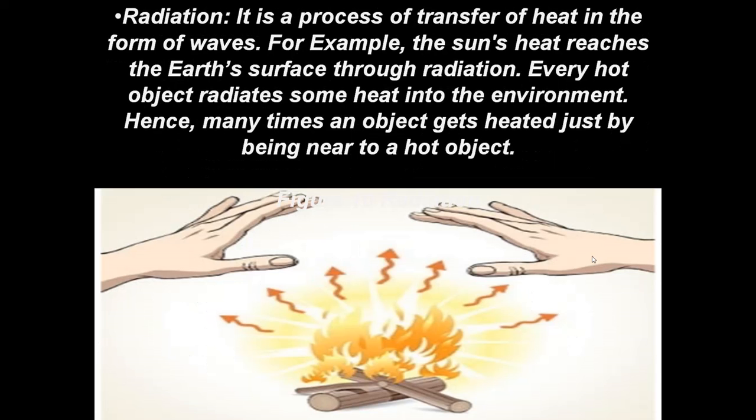The next type of transfer of heat is radiation. Radiation is a process of transfer of heat in the form of waves. For example, the sun's heat reaches the earth's surface through radiation. Every hot object radiates some heat into the environment, and many times an object gets heated just by being near a hot object. As you can see here, there is a bonfire, and if you keep your hand near this fire, you can feel the warming effect because radiations come out through the fire and move in all directions.